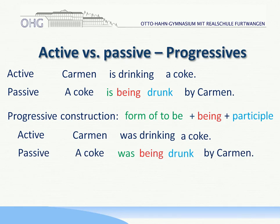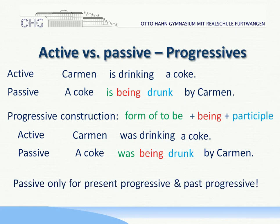Please mark that 'being' is only spelled with one 'e'. Also mark that the passive in the progressive is only used for the present progressive and the past progressive. All the other tenses it does not make so much sense — in the will future yes, but not so much for the present perfect or the past perfect.